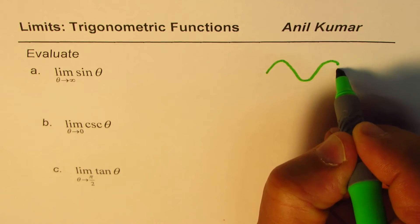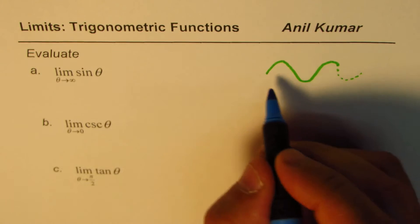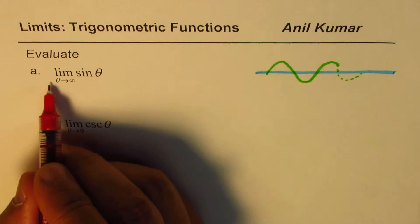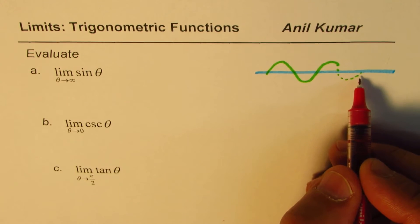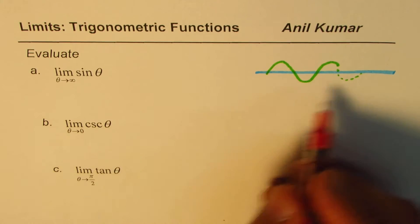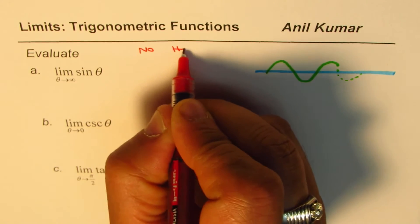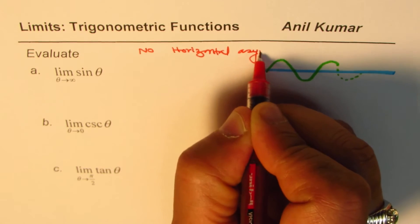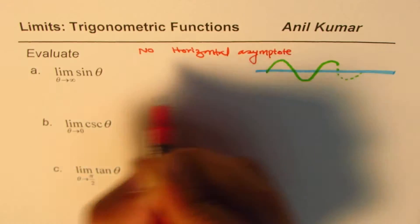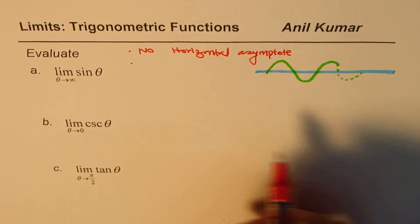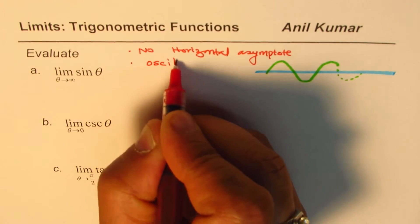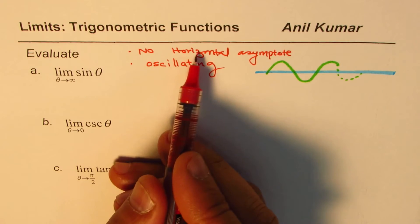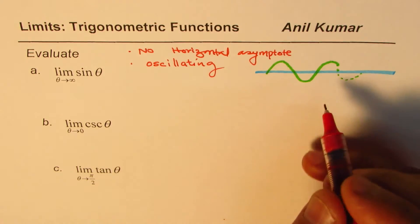The sine wave is kind of like this and it continues. If you look at this, we are not sure at infinity — when theta approaches infinity — where it will approach. There is no horizontal asymptote, and it is oscillating. So when theta approaches infinity for functions which do not have a horizontal asymptote or which are oscillating,